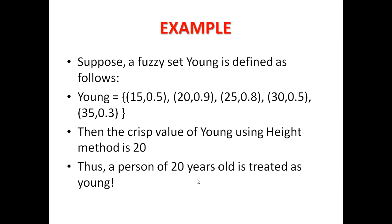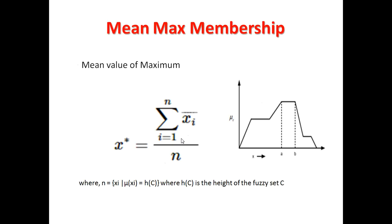Let's see an example. Suppose we have a fuzzy set 'young' defined with specific values and their membership values: 15 has membership 0.5, 20 has 0.9, and 25, 30, and 35 have lower membership values. The highest membership value is 0.9, corresponding to the value 20. So the crisp value returned by this function will be 20, meaning a person aged 20 is treated as young.